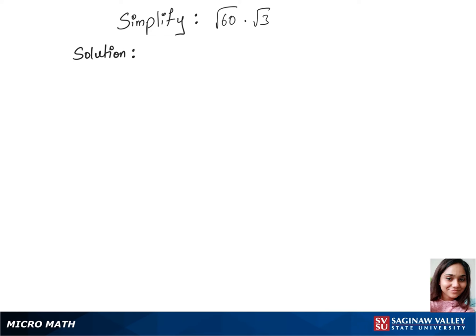Let's simplify this question by writing under one root: 60 times 3, which is the square root of 60 times 3. This gives us root of 180.